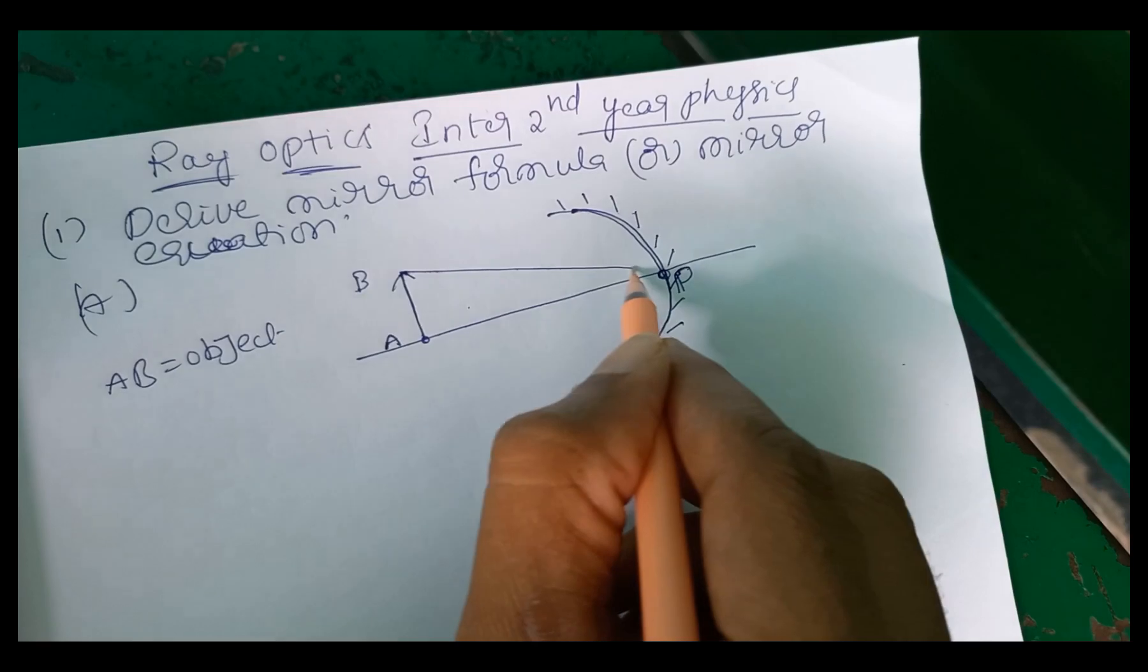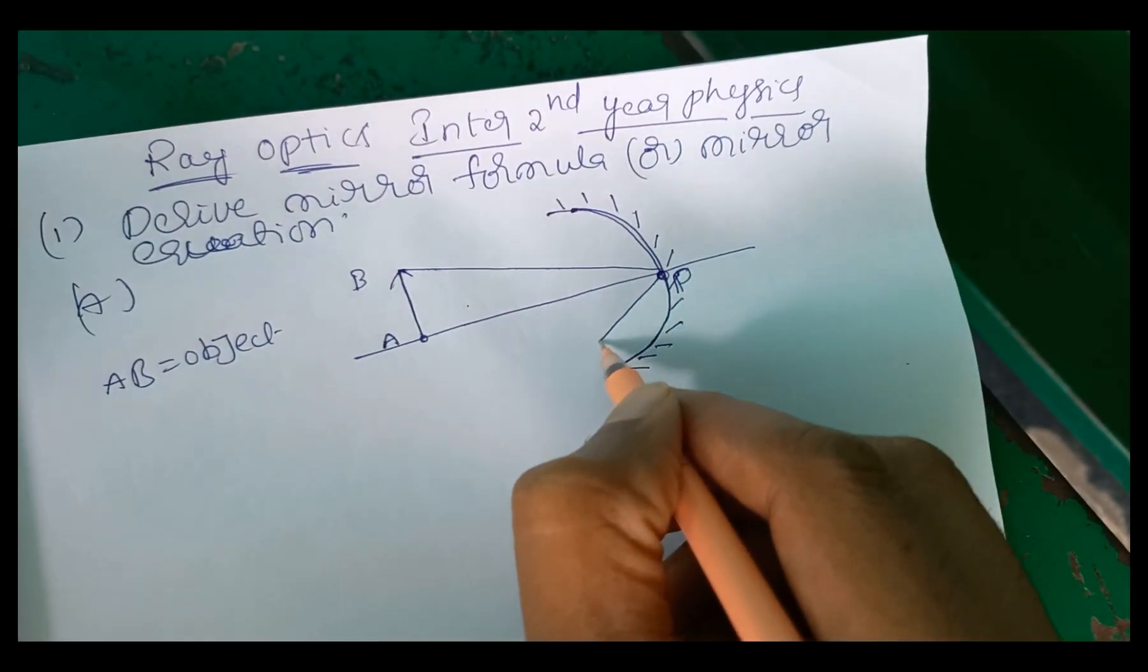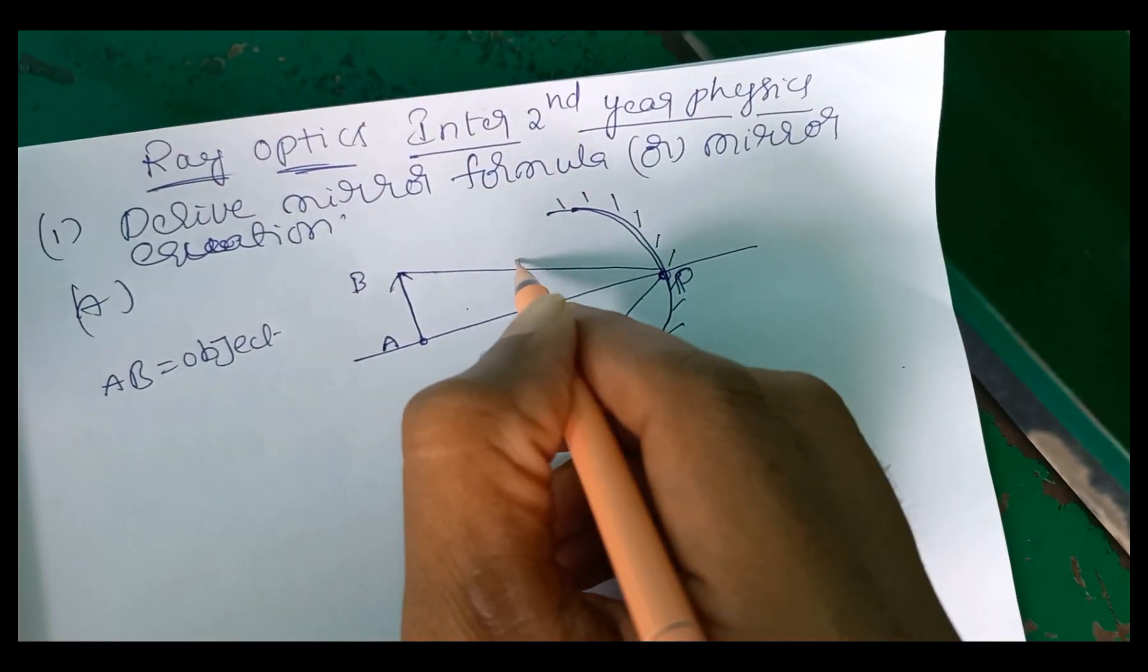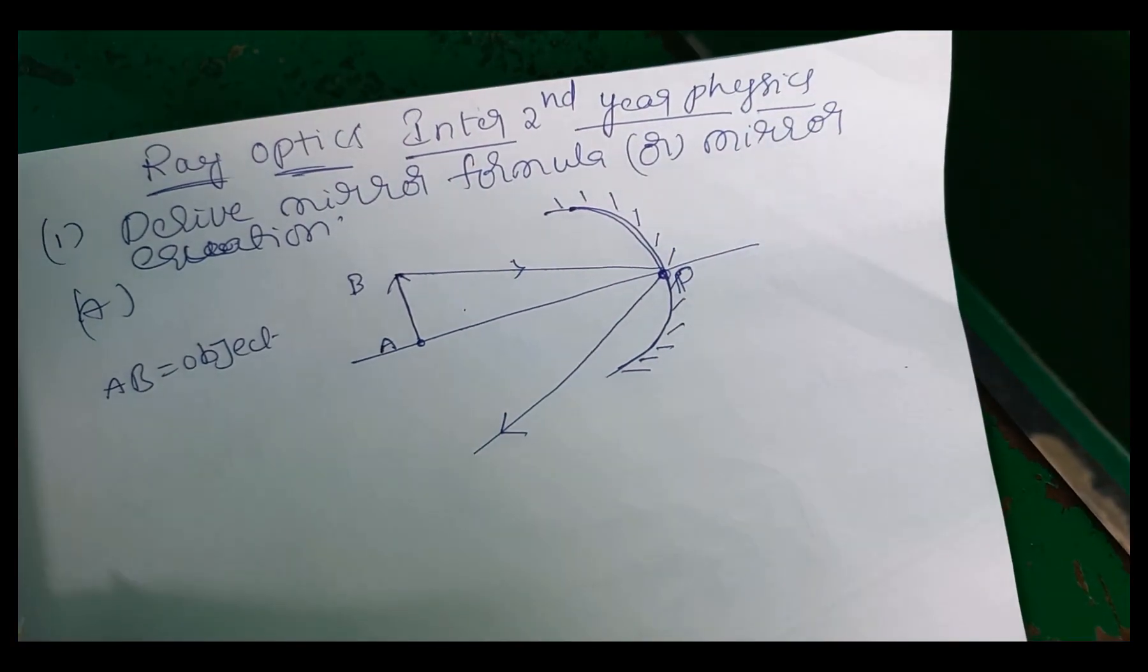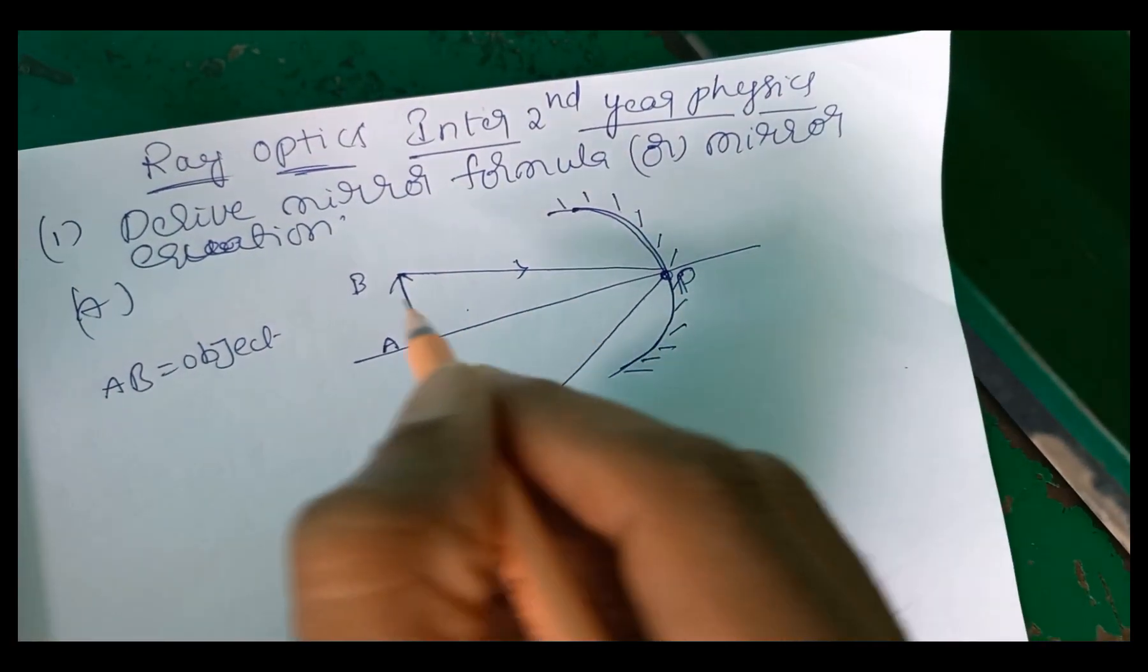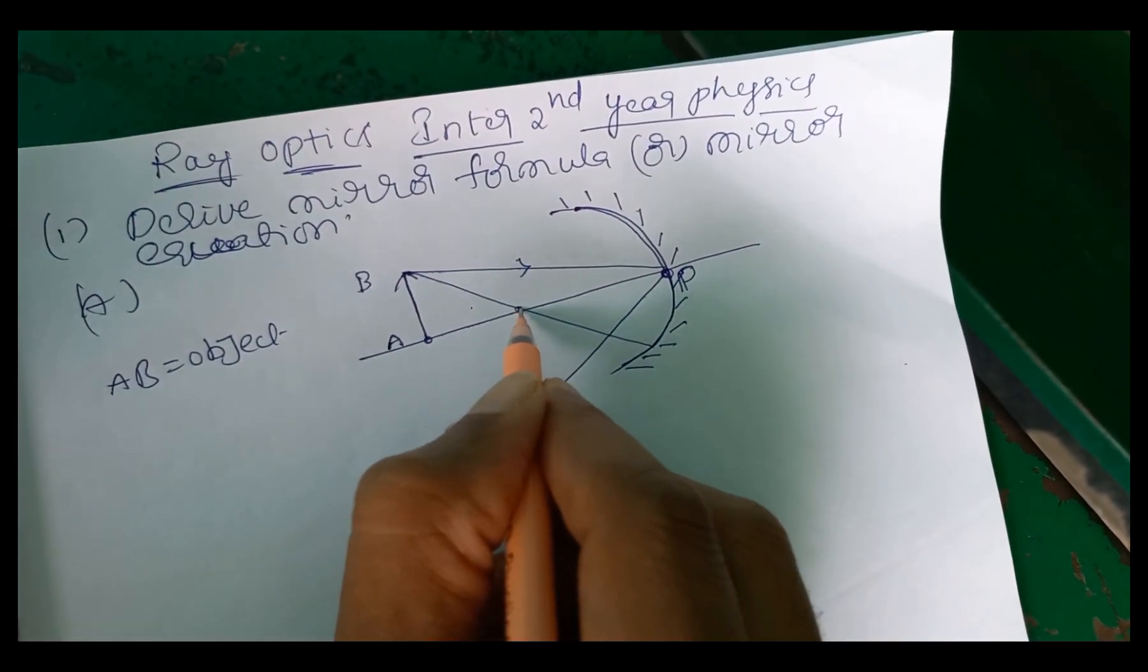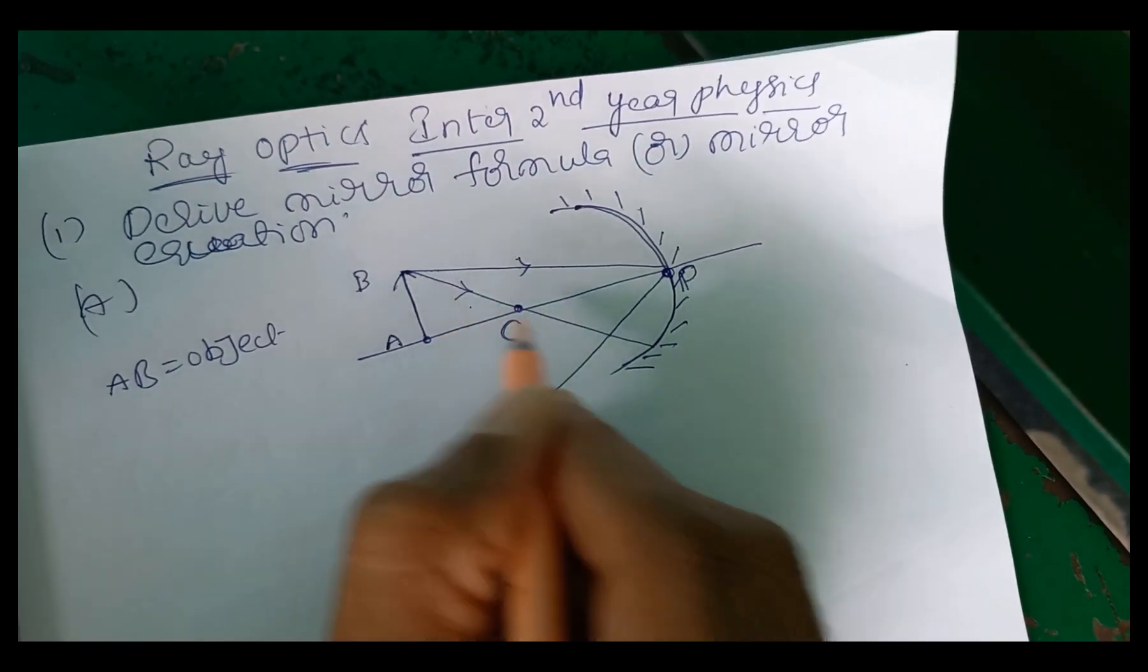So this is incident ray and this is reflected ray. And one more ray. It is through C. The center of curvature is reflected ray.